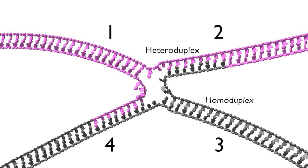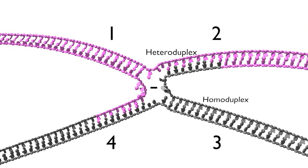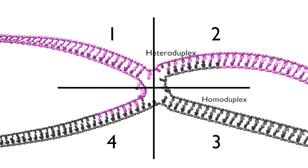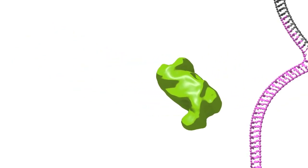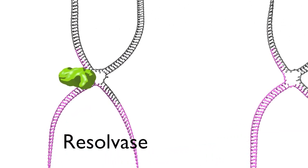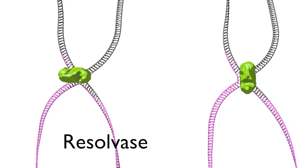There are two axes of symmetry in the Holliday junction: one horizontal and one vertical. Two strands of the four-strand Holliday junction are cleaved by symmetrical nicks made by a specialised recombination enzyme called the resolvase. This cleavage can occur across either the horizontal or vertical axis.